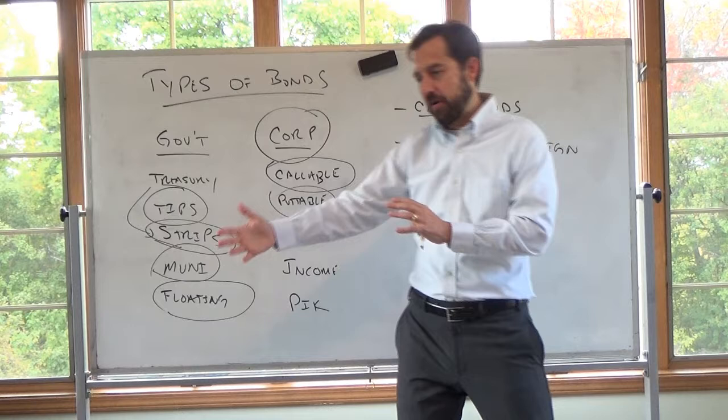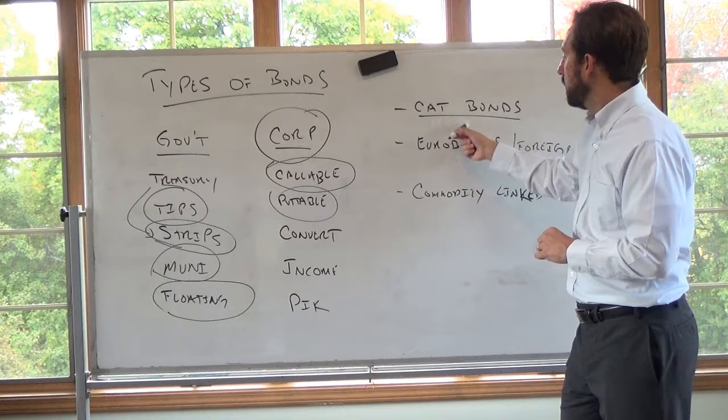So the idea of these are, cat bonds are often sold by insurance companies. So the idea here is, if there's a hurricane hits Miami, there could be a lot of damage, so I don't have to pay these bonds back and I'll use that money to pay out the claims. So often sold by insurance companies.